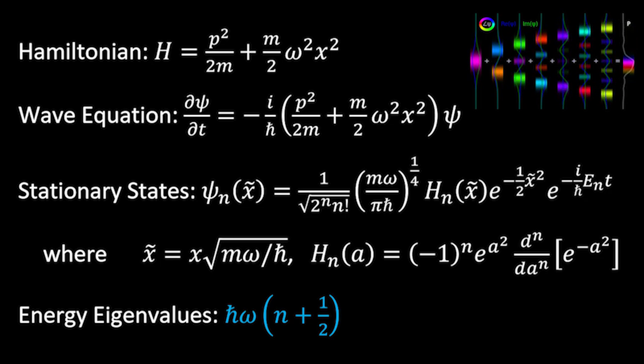And now finally, each standing wave has its own unique energy eigenvalue, which is the energy of that state. And it's equal to the reduced Planck's constant times omega times the order of the wave plus one half. This is a nice, beautiful, elegant solution. I really like this solution for the energy eigenvalues.